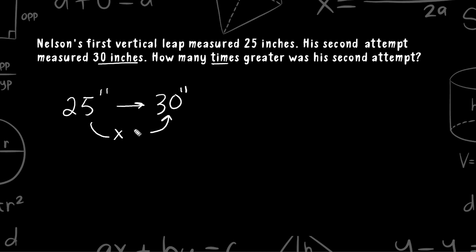So to figure that out, we do the inverse of multiplication, which is division. So what we do is we take the greater jump, which is 30 inches, and we divide it by the smaller jump, which is 25 inches.